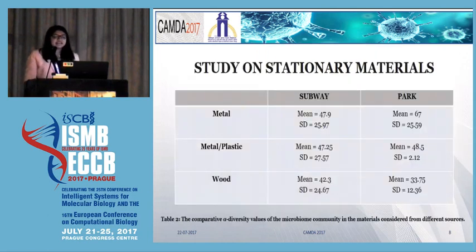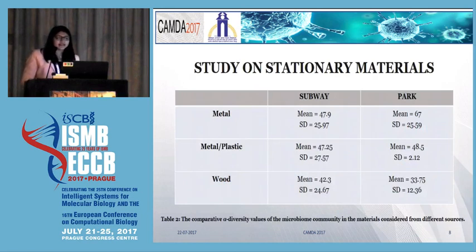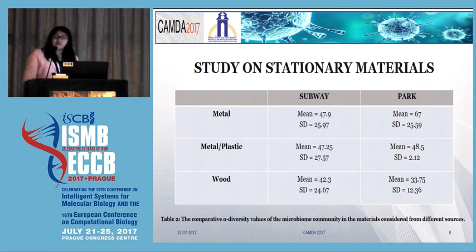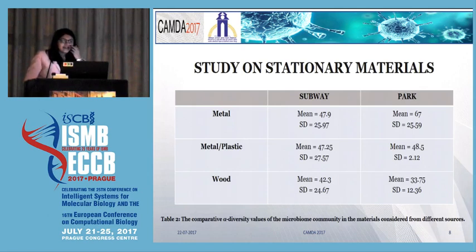We have taken a set of stationary materials like wood, metal, and metal-plastic, and computed the alpha diversity for those materials. The average value accounts to around 49, which implies a significant diversity. The material chosen was such that it existed in multiple locations, for example the park and the subway in our case. The standard deviation here reflects the spread of alpha diversity for a given material in a given location.